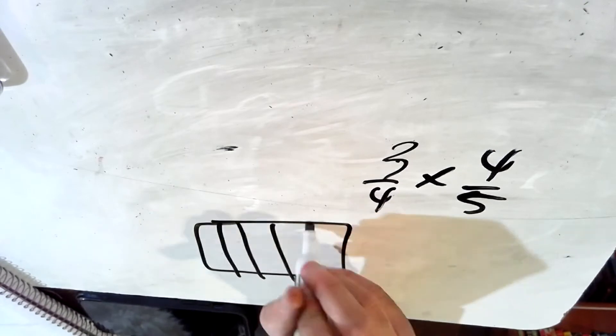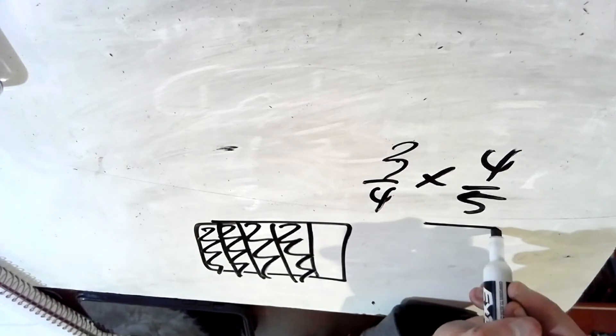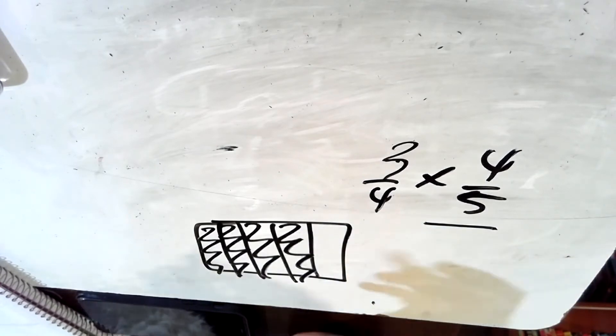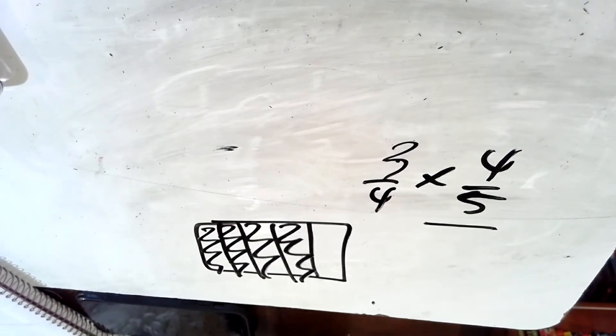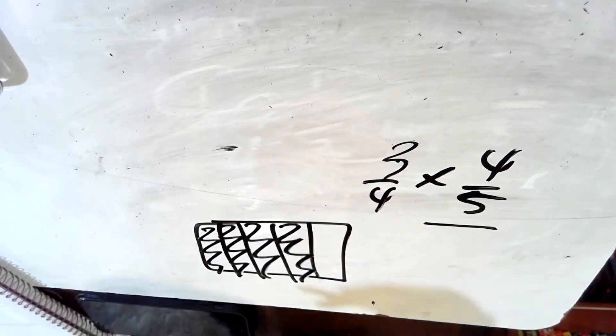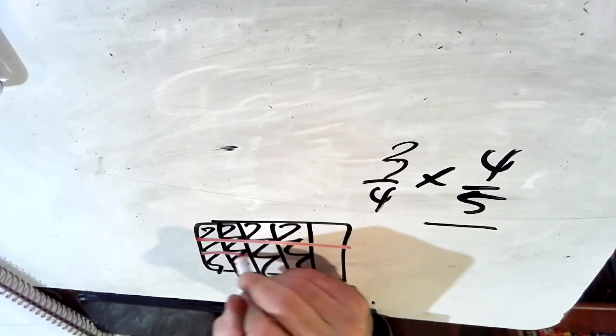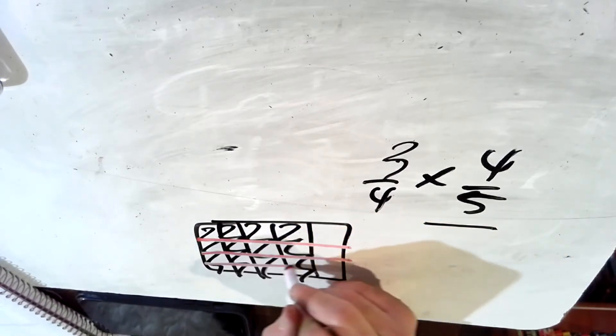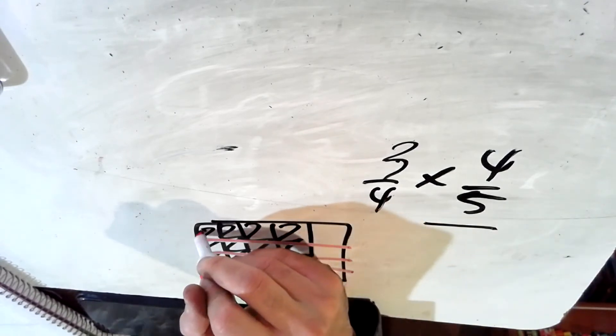So let's take a piece of land and break it into fifths. One fifth, two fifths, three fifths, four fifths. That's Talisha's land. Four fifths of a section of land. And three fourths of that land is green beans. Maybe one fourth is something else. So we divide her land. One fourth, two fourths, three fourths, four fourths.